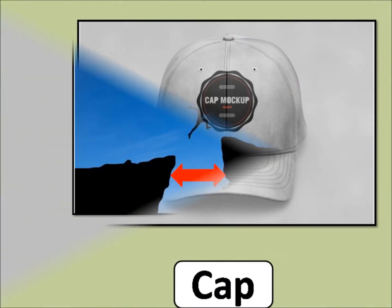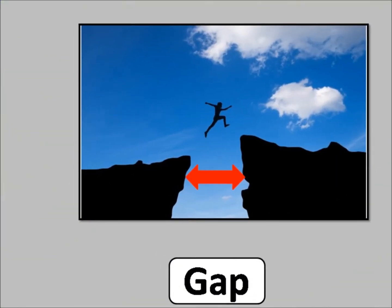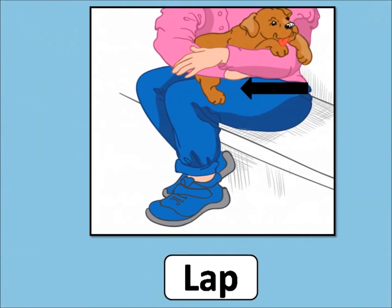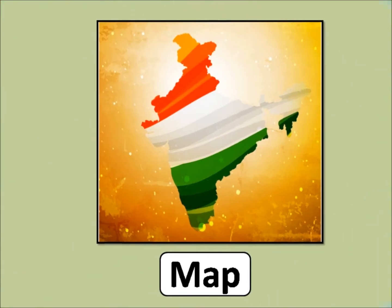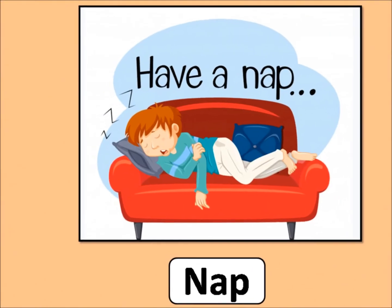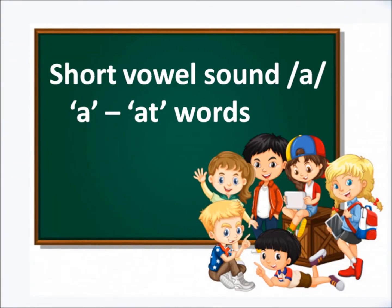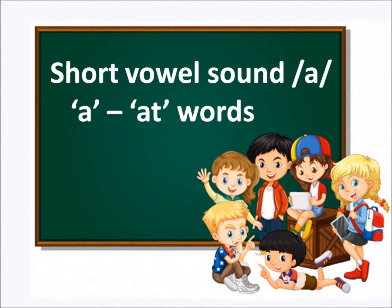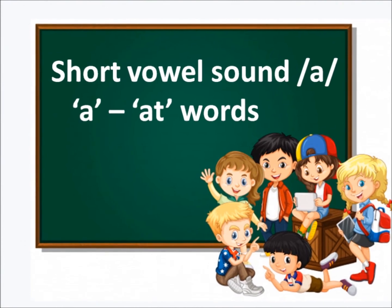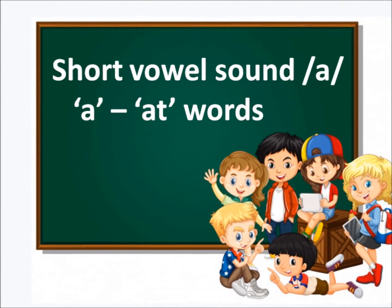Cap, Gap, Lap, Map, Nap, Tap. Next one is AT words. It will sound like: A, T — At. B, A, T — B, At — Bat.